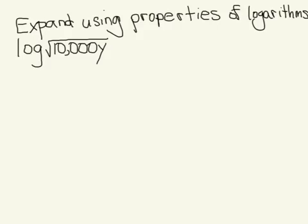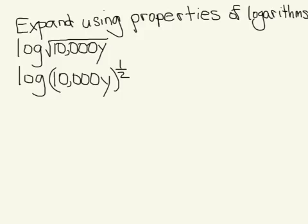We learned earlier in the course that you can rewrite the square root as a power. What it would look like is log of 10,000y to the one-half power. The reason behind that is because whenever you have a square root, the default power or the root number inside here is called the index. If there's no number showing, the default is that it's a 2 for square root.